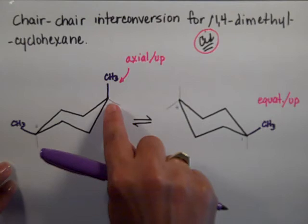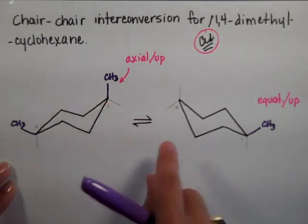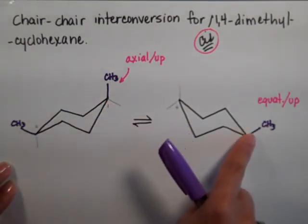So this methyl right here, when we pull this carbon all the way to the bottom, it still remained up but it came to an equatorial position.